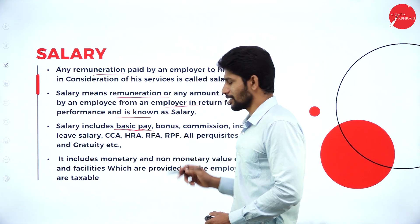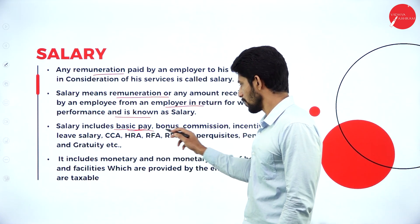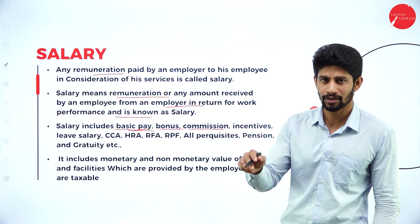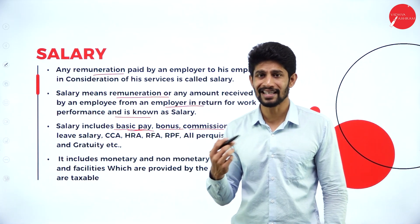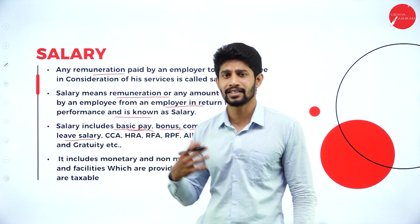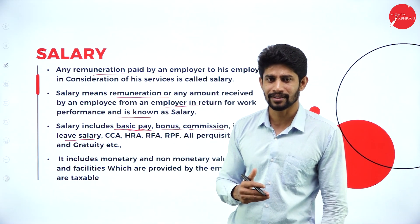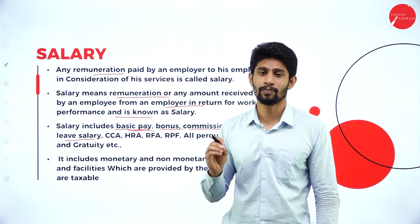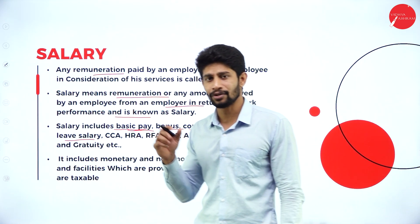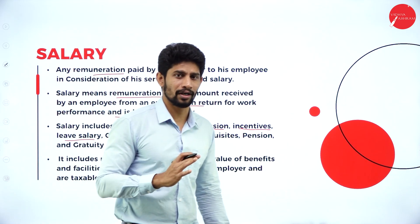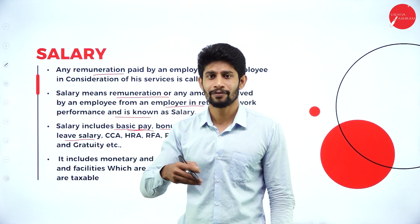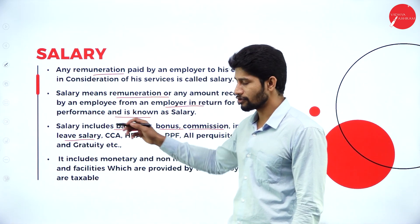Salary includes basic salary, bonus — if you are receiving bonus, that will also be called salary. If you are receiving commission on your sales, that commission will also come under your salary. Incentives, if you are receiving any incentives, that will also be your salary. Leave salary — for example, earned leave (EL) or casual leave (CL). If you take 1 or 2 CLs in a month, they will not cut your salary or mark loss of pay; they will pay you salary. For earned leaves, in a year you will have 15 to 30 ELs, and if you don't take them, at the end of the year the employer will pay you cash for the number of ELs saved — that also comes under salary.